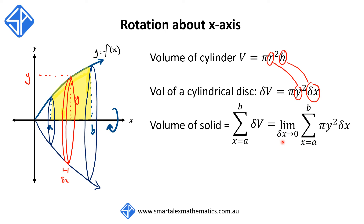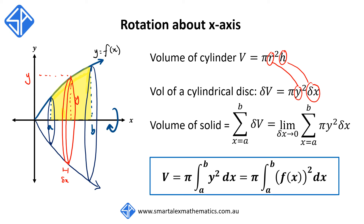Again, we take the limit as delta x approaches zero — we make the thickness of each disk very, very thin with many, many of them so that we get a smooth surface. And again, all of this gets replaced by the integral operation so that we've got the formula V is equal to pi times the integral going from a to b of y squared times dx. Because we're integrating with respect to dx, we need to make sure that y is expressed in terms of x. Hence, we replace y with f of x and we get the other formula V is equal to pi times the integral going from a to b of f of x squared dx.